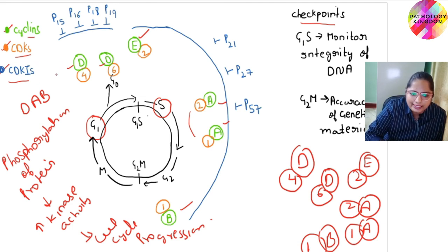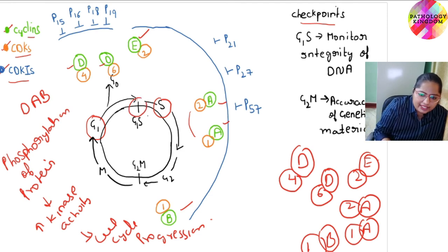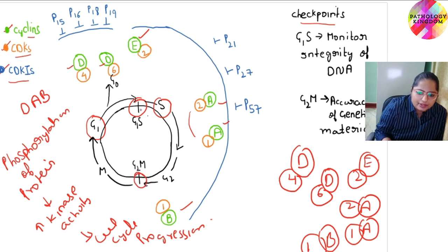Now about the inhibitors. There are two checkpoints. One is G1S and the other is G2M. G1S is the checkpoint between G1 phase and S phase. G2M is the checkpoint between G2 and M phase. G1S monitors integrity of DNA. G2M monitors accuracy of genetic material.